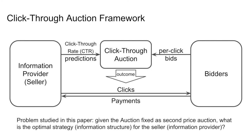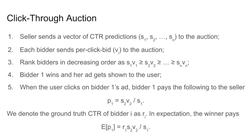Throughout this work, we assume the auction format is fixed as the click-through second-prize auction, charging per-click prices, in order to focus on the information design problem. Formally, the auction happens in the following steps. The seller sends the CTR predictions for each bidder as a vector s1, s2, …, sn to the auction based on his own knowledge of CTRs. At the same time, each bidder sends her per-click bid to the auction. We use vi as the bid because the per-click auction is dominant strategy truthful for the bidders, no matter what the seller and other bidders do. The auction then ranks the bidders by their scores, equal to their CTR prediction times bid.